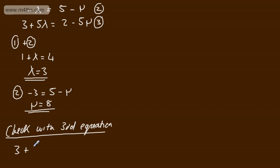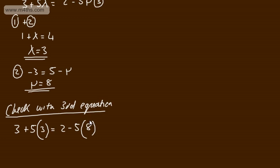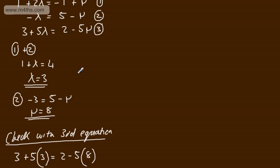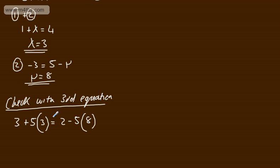We're asking does 3 plus 5 lots of λ, which is 3, equal to 2 minus 5 lots of μ, which is 8. We would need these to equal each other to be consistent and therefore intersect. So what we've got is 3 plus 15 equals 2 minus 40, so we can see that is not the case.